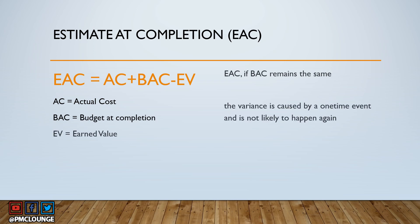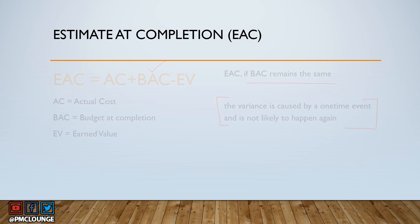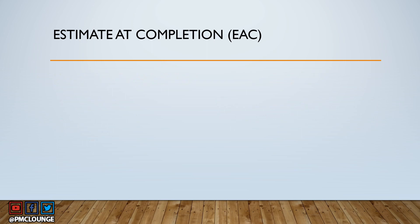Another EAC formula: EAC equals AC plus BAC minus EV, where AC is Actual Cost, BAC is Budget at Completion, and EV is Earned Value. Use this formula if BAC remains the same and the variance was caused by a one-time event that is not likely to happen again.